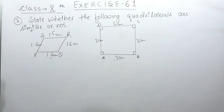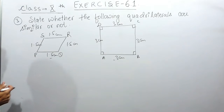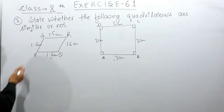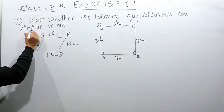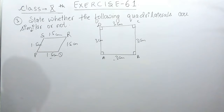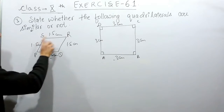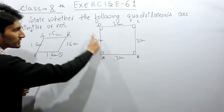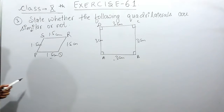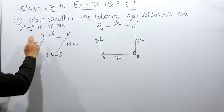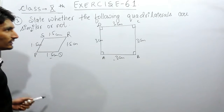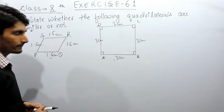Now let's prove this mathematically. We know that to prove two figures similar, first, all their angles must be equal, and secondly, their corresponding sides must be in proportion.